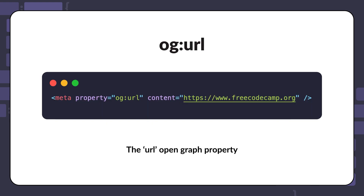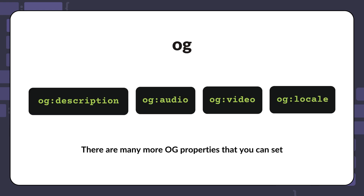The fourth important OG property would be the URL. Here is an example of setting the OG URL for the freeCodeCamp homepage. There are many more OG properties that you can set like the description, audio, video, and locale. However, the open graph URL, image, type, and title are the most important ones to include.